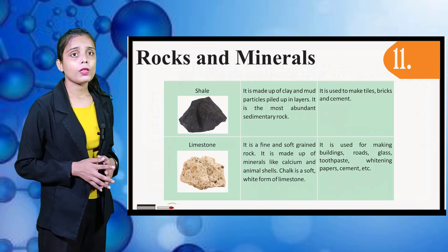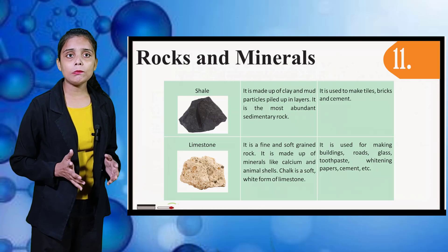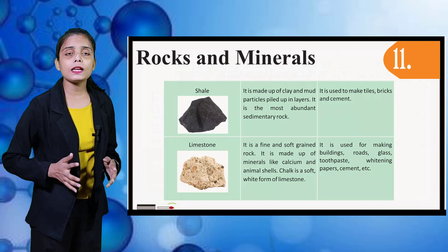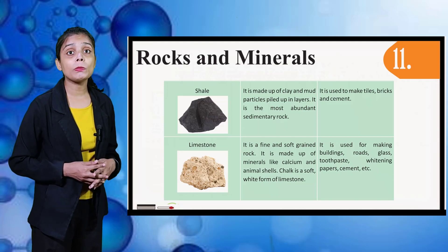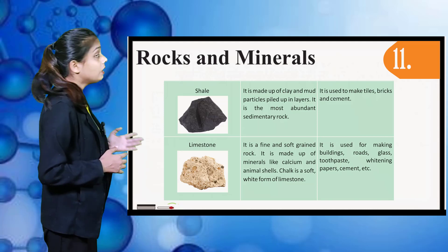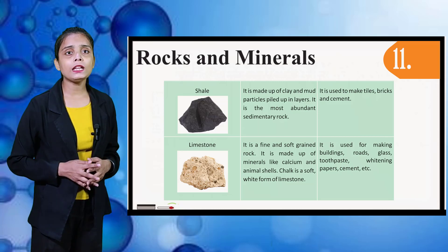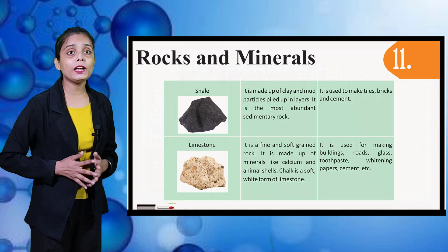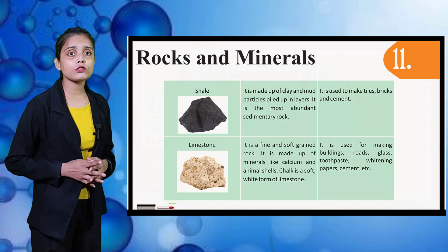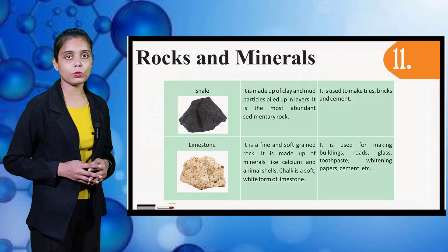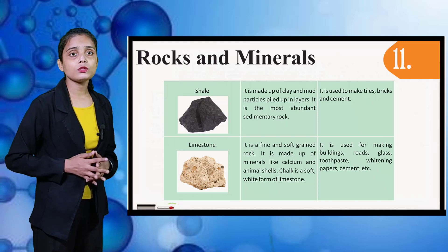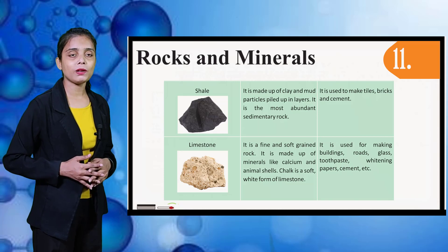Next is Shale. It is made up of clay and mud particles piled up in layers. It is the most abundant sedimentary rock and is used to make tiles, bricks, and cement. Next is Limestone. It is a fine and soft rock made up of minerals like calcium and animal shells. Chalk is a soft white form of limestone. It is used for making buildings, roads, glass, toothpaste, whitening paper, cement, etc.